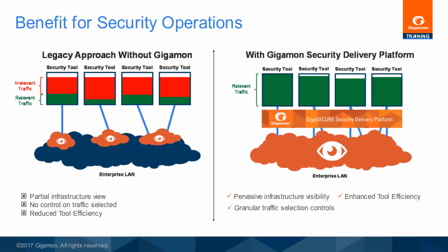As an added benefit, by replicating a traffic stream it is possible to expose the same traffic to multiple tools simultaneously, so that different types of tools can inspect the same activity, or so that proof-of-concept evaluations of new technology can occur in parallel, and the results of each are based on identical network activity.